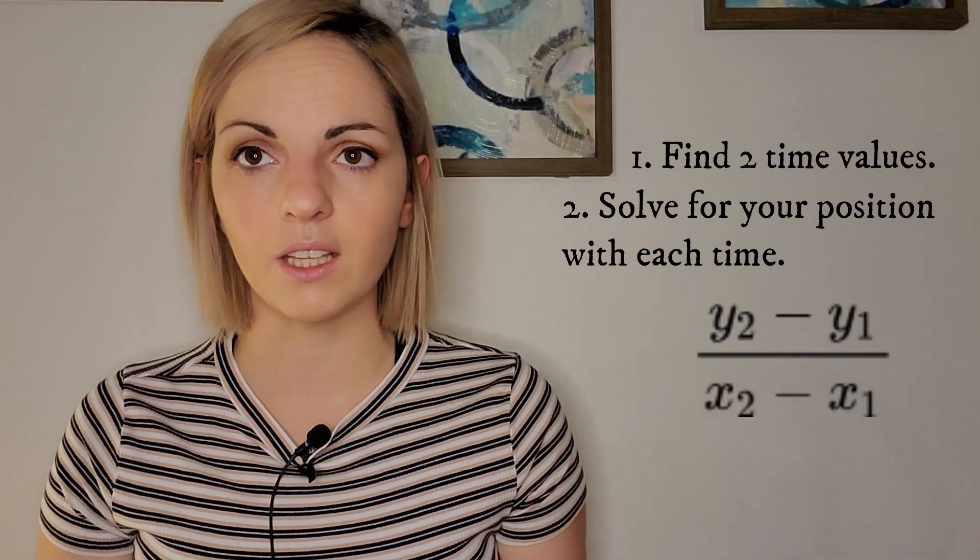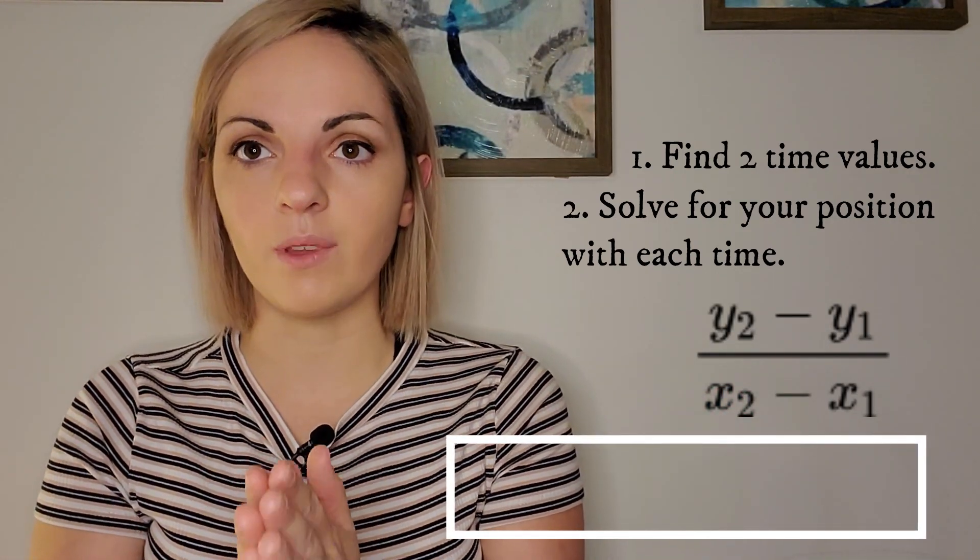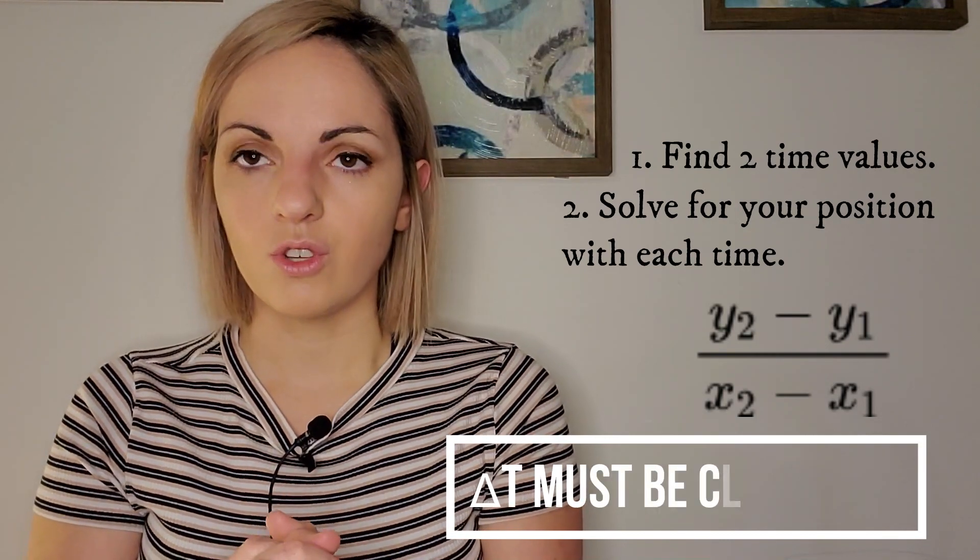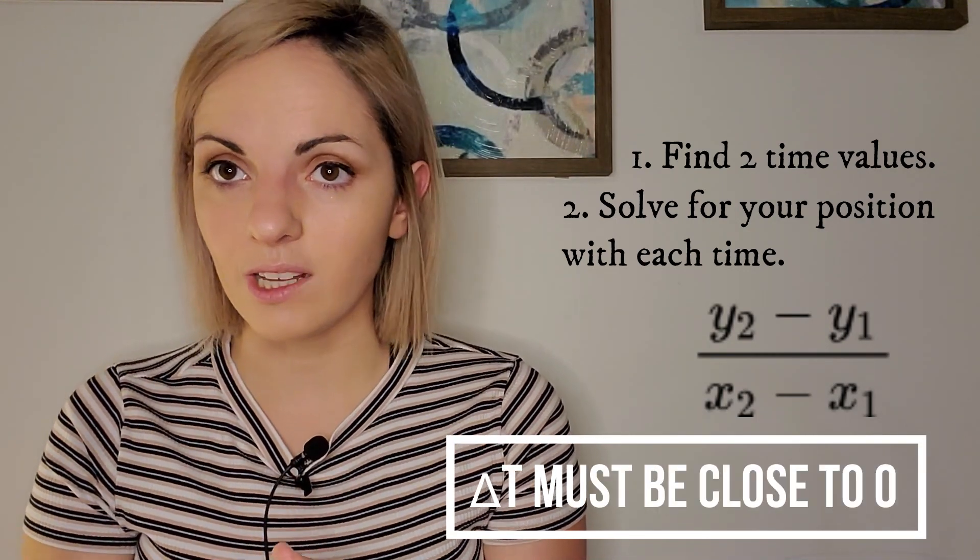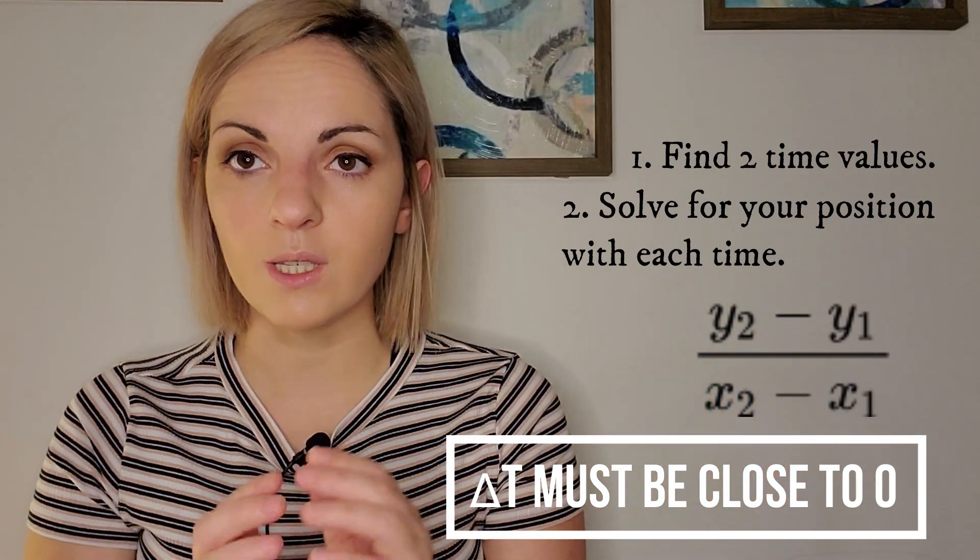Hi, so to summarize what we just said, for the first method, you just have to find two different times, one a little bit after and one a little bit before the given time. Once you do this, you plug them into your position equation and get your two position values and your two time values, which are the ones you picked at the beginning, and solve for your slope. The smaller the difference in the time, the better, because you want to find instantaneous velocity, not an average velocity. So you want to make the number very, very small.